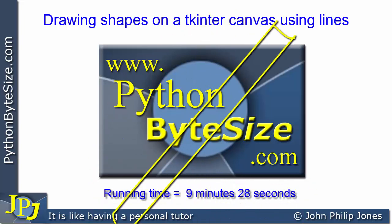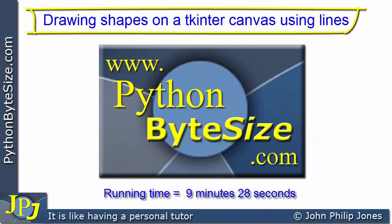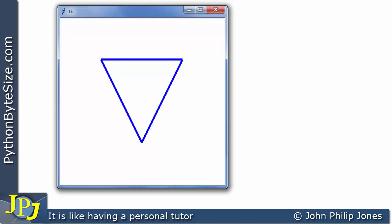In this video I'm going to look at how you can draw shapes on a tkinter canvas using lines. I'll consider a triangular shape and draw it using lines in Python. There are other ways to draw these shapes that I'll cover in other videos later in this playlist.